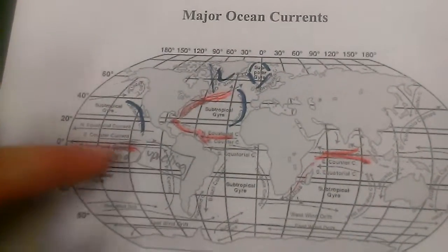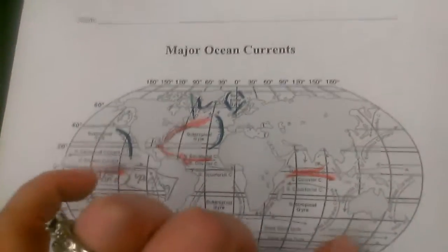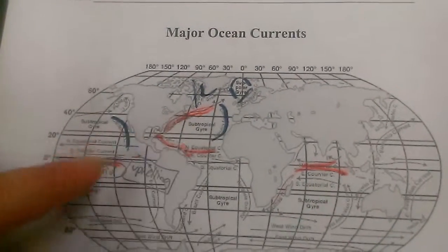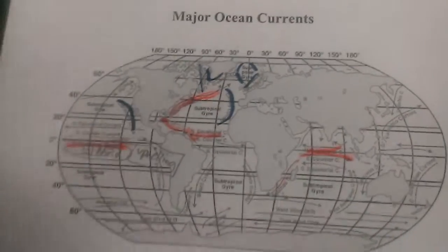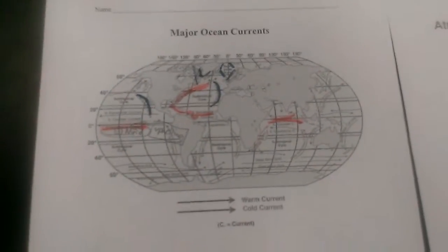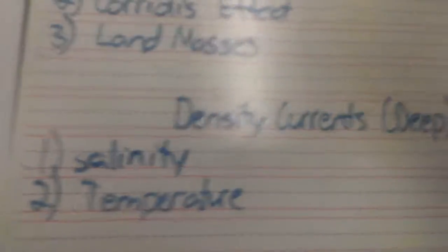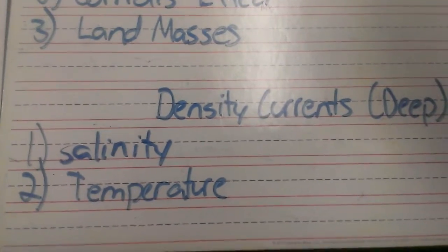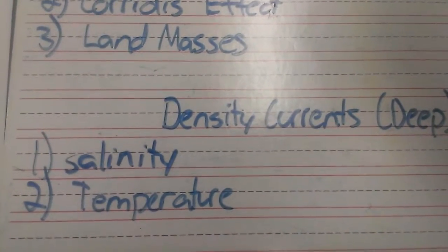It actually can affect everywhere in the globe, because notice these currents connect all the oceans and they're distributing all the heat around the world. Now, that's surface currents. What about below the surface? Below the surface are density currents, or deep currents. They're driven by salinity and temperature.